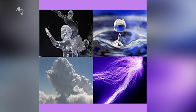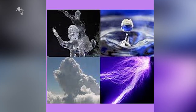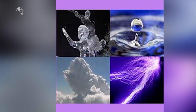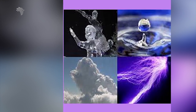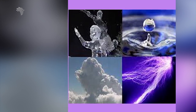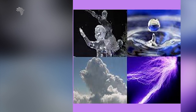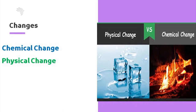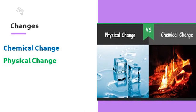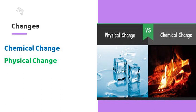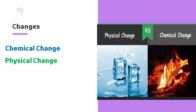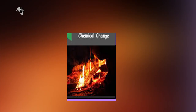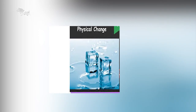In your lower grade chemistry classes, you learned a lot about matter. Matter is anything that occupies space and has mass. The changes around us are of two types: chemical changes and physical changes.